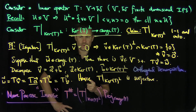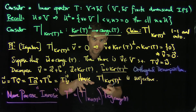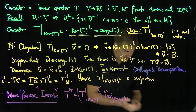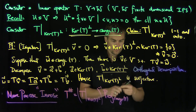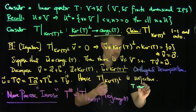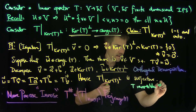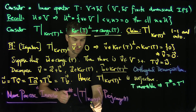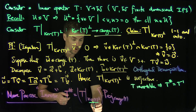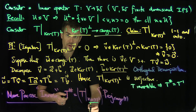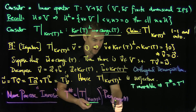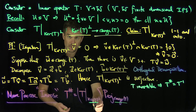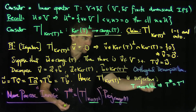The important thing is that this Moore-Penrose inverse reduces to the regular inverse when T is invertible. If T is invertible, then T-sharp equals T-inverse. That's easy to see: if T is invertible, the kernel of T is trivial, so perpendicular to that is everything. And the range of T is everything. So T-sharp is just T restricted to the whole space, inverted — in other words, T-sharp equals T-inverse in this case.